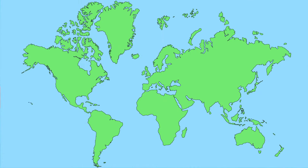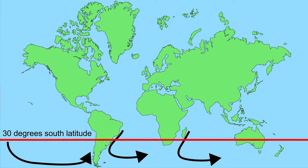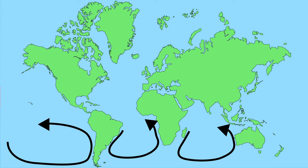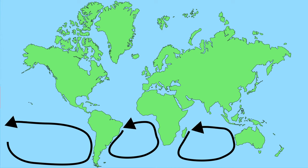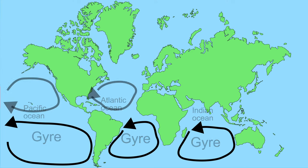In the southern hemisphere, the same happens but in the opposite direction. The west wind south of 30 degrees south latitude causes the sea to flow to the east. The sea moves to the left and then follows the trade winds from the east, turning the gyres counterclockwise. In the southern hemisphere there are three gyres, in the Atlantic Ocean, the Pacific Ocean, and also in the Indian Ocean.